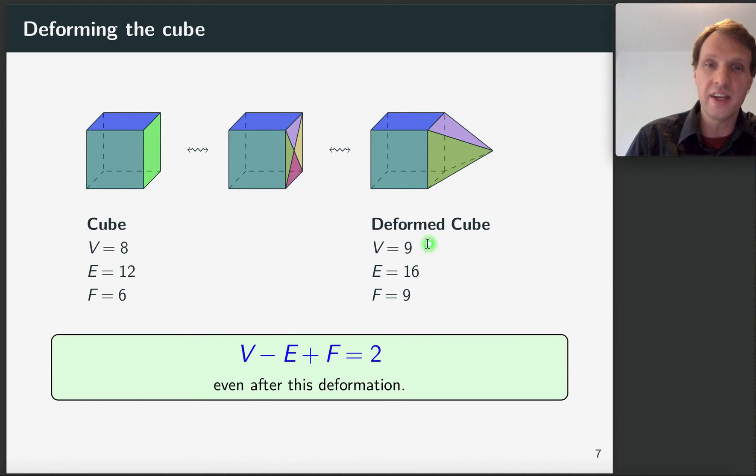And now you can check again that if you take the number of vertices minus the number of edges plus the number of faces, you can get two. And the most surprising thing about this number of vertices minus edges plus faces is that it also doesn't change under any other deformation that you can think of. So no deformation that you can perform on the cube will change this number.